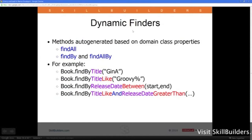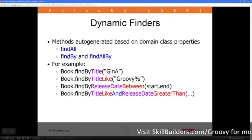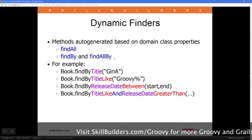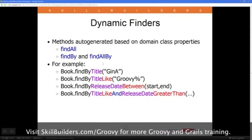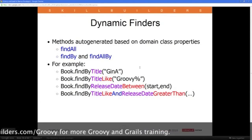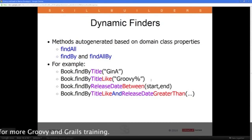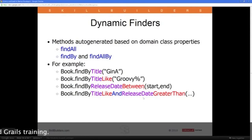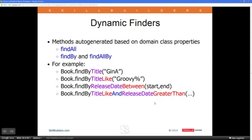You also get dynamic finders. All you have to do is build a domain model, and the queries are already available — you don't have to implement them. For a book class with titles and release dates, you can automatically say Book.findByTitle('Gina') — Gina stands for Groovy in Action. Or findByTitleLike('Groovy'), or findByReleaseDateBetween a start and end, or findByTitleLikeAndReleaseDateGreaterThan — and I didn't have to write any of that. It's all provided by GRAILS.